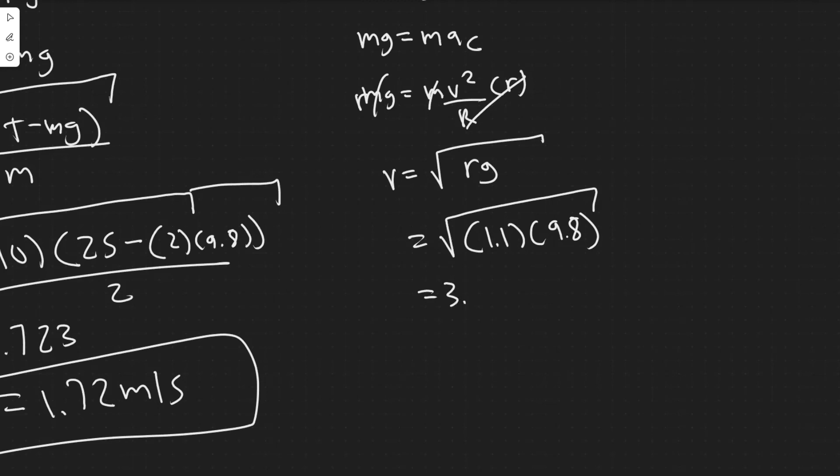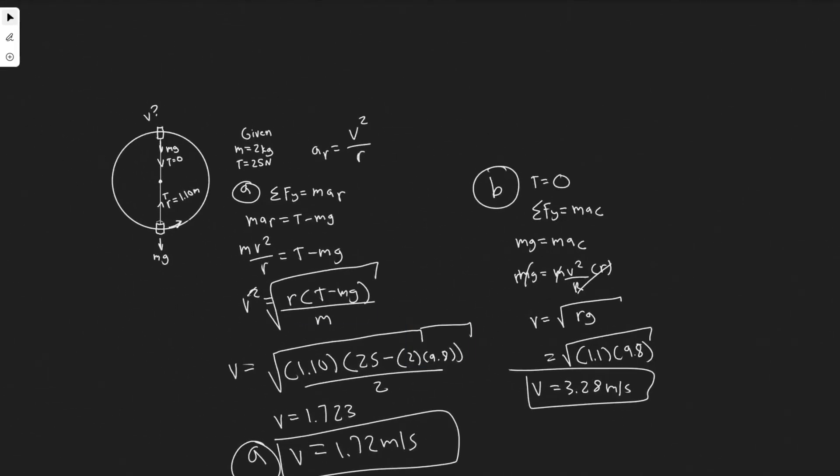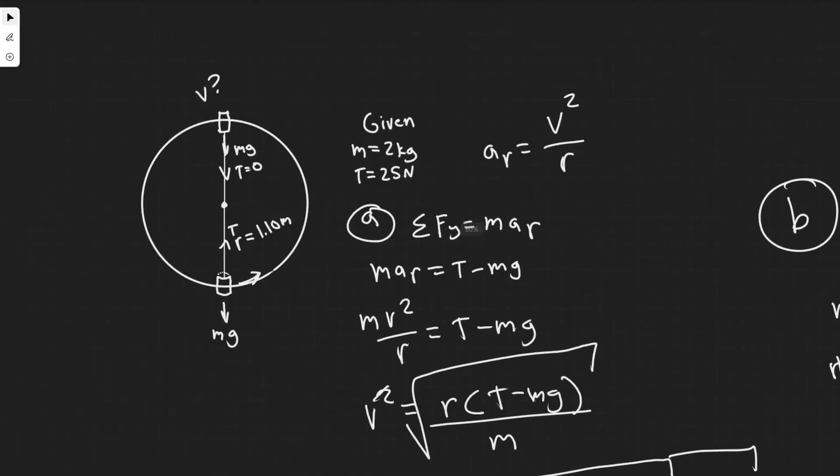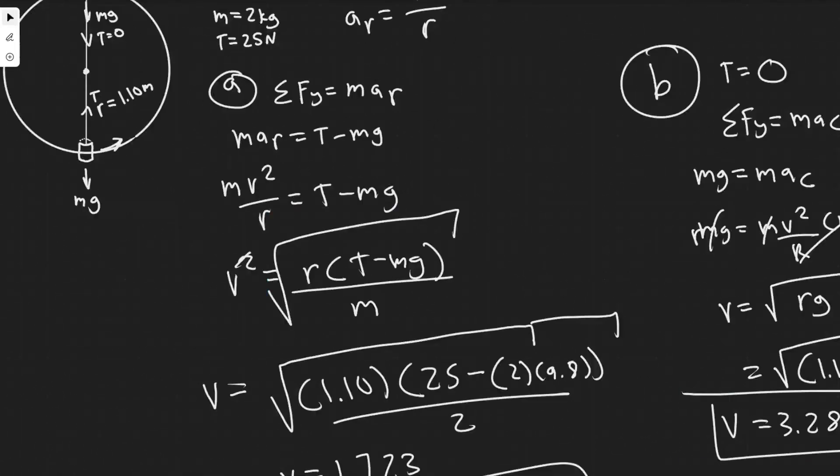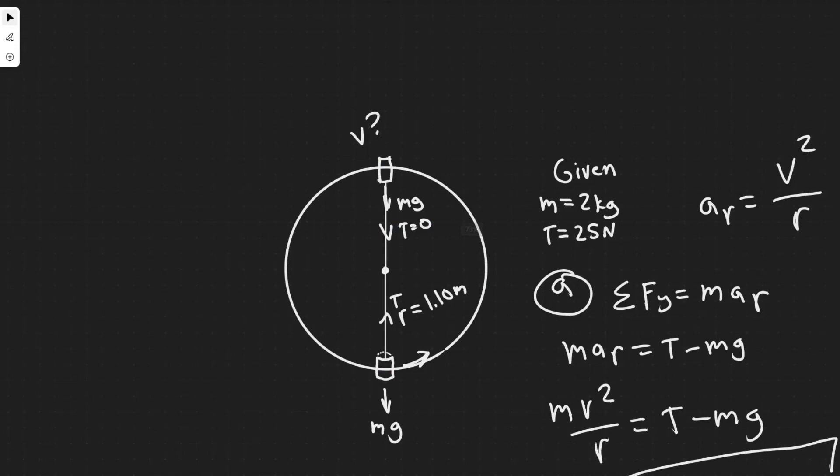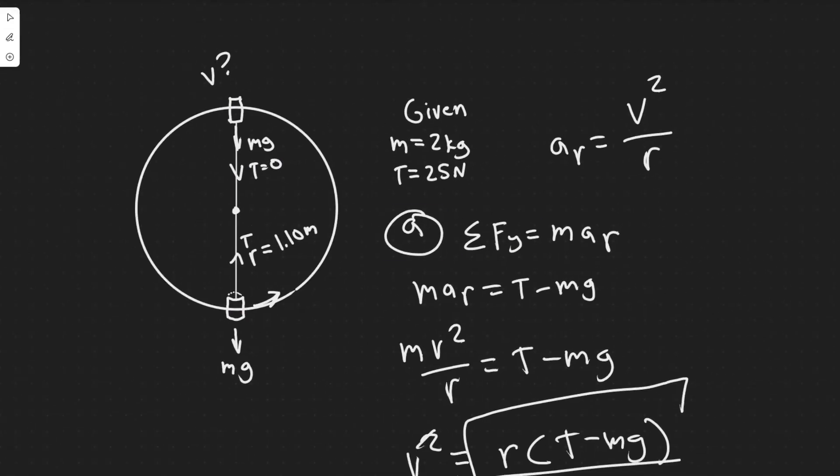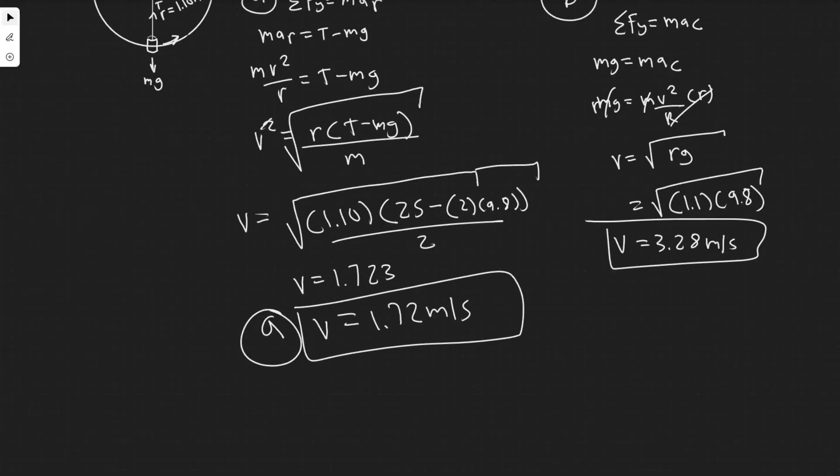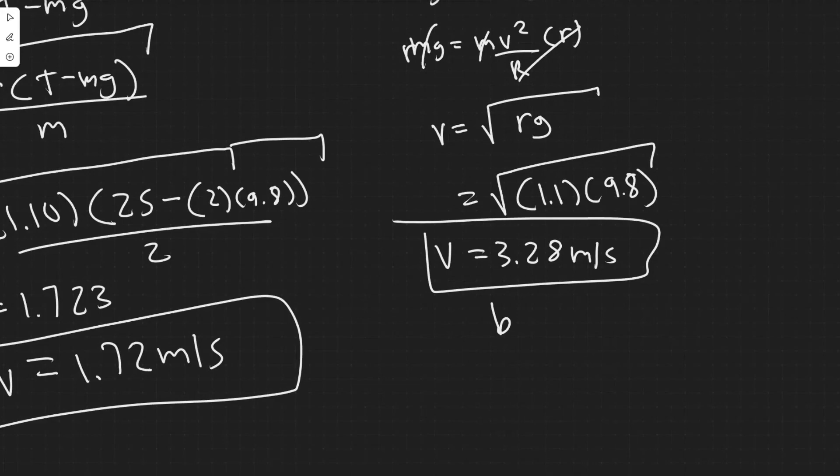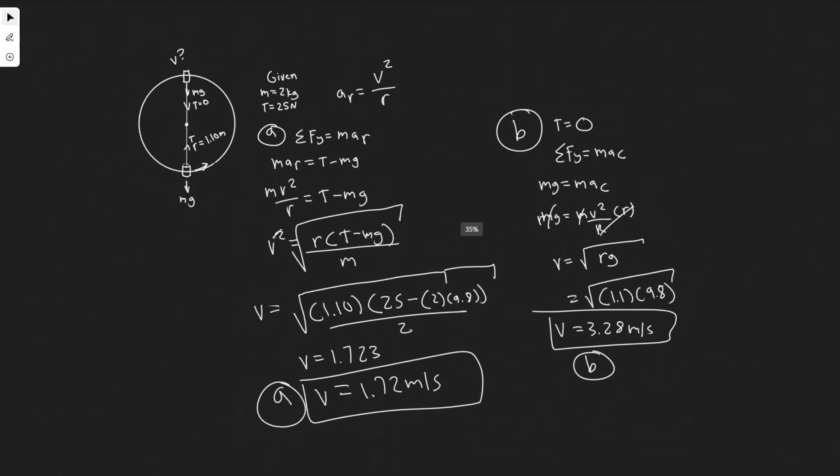Plugging this in, you'll get the velocity is equal to 3.28 meters per second. So how fast must the bucket move at the top so it doesn't go slack? In order to not have any slack, it's got to move with at least this speed, 3.28 meters per second. The reason is because tension is going to be equal to zero if we want to find the minimum speed. So 1.72 meters per second was the speed at the bottom, and this is the minimum speed at the top for B. These are your answers. Hopefully you found this useful.